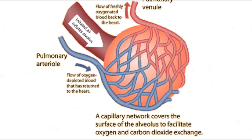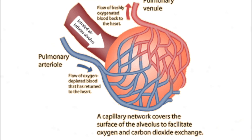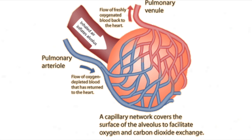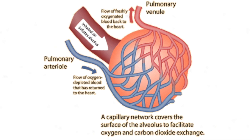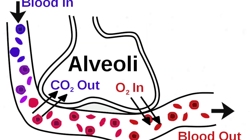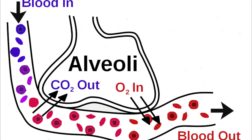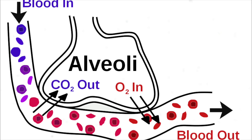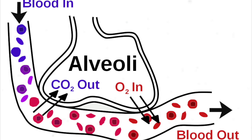Alveoli also have a rich blood supply which maintains a steep concentration gradient to allow diffusion to be as quick as possible. The air that goes into the lungs is relatively low in carbon dioxide and high in oxygen, yet the air that goes out of the lungs is high in carbon dioxide and low in oxygen. This is because oxygen moves into the blood whilst carbon dioxide in the blood moves into the lungs.